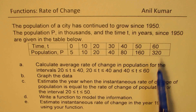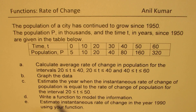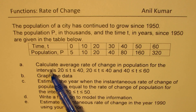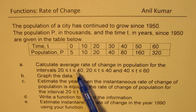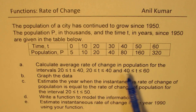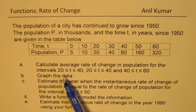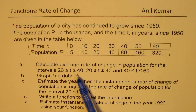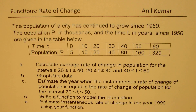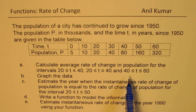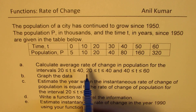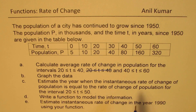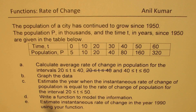The population grows: 5, 10, 20, 40, 80, 160, and 320. Based on this we have 5 questions. Part A: calculate average rate of change in population for the intervals between 20 to 40 and 40 to 60.